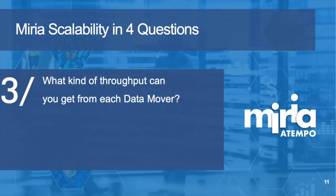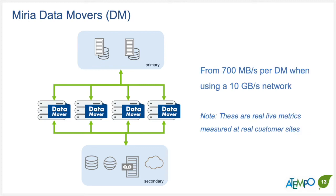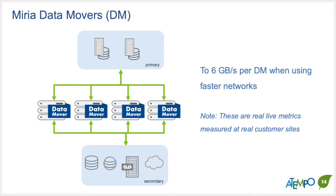Question three: What kind of throughput can you get from each data mover? Each one of those data movers was basically able to drive about 700 megabytes a second. Now, that wasn't a limitation of the data mover — that was simply because we were using 10-gigabit networks. These data movers can move much faster, moving a lot more data depending on the network infrastructure, upwards of six gigabytes a second.